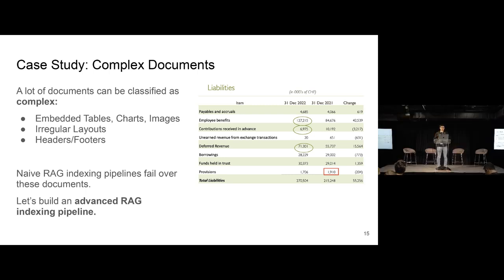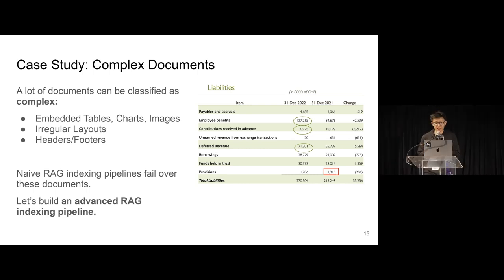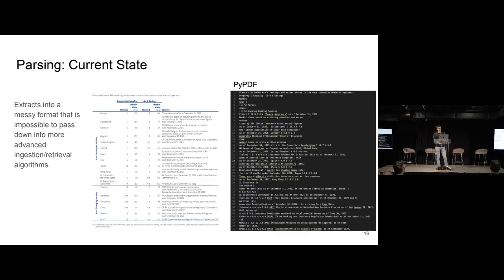And so oftentimes, we see that naive RAG indexing pipelines fail over these documents. You're just not able to get back when you just do the naive slicing and all this stuff. You get back a whole bunch of hallucinations when you ask a question over, for instance, a table or a chart or an image. One of the main reasons this is the case is just bad parsing.